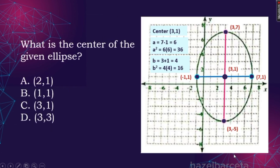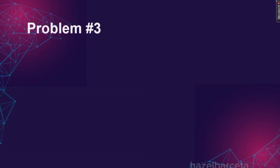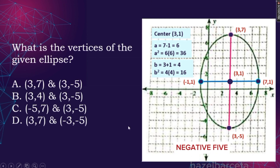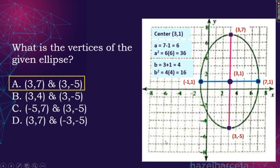Medyo madali kasi nakagraph na ang ating conic section. What is the center of the ellipse for problem number two? Center is already three, one. For problem number three, what are the vertices of the given ellipse? Ang vertices ay nasa mas mahaba, not the co-vertices which are nasa minor axis. So our vertices are three, seven and three, negative five. Yun lang po, maraming salamat.